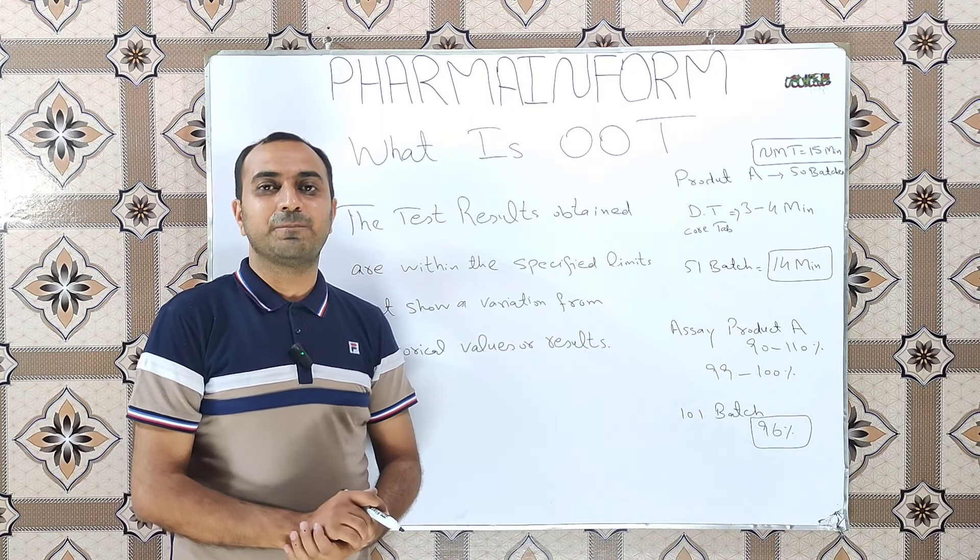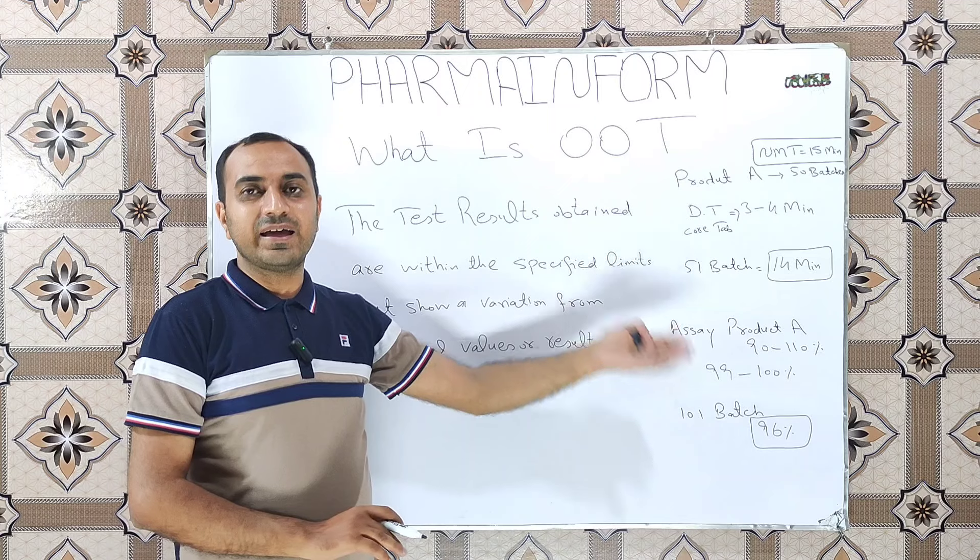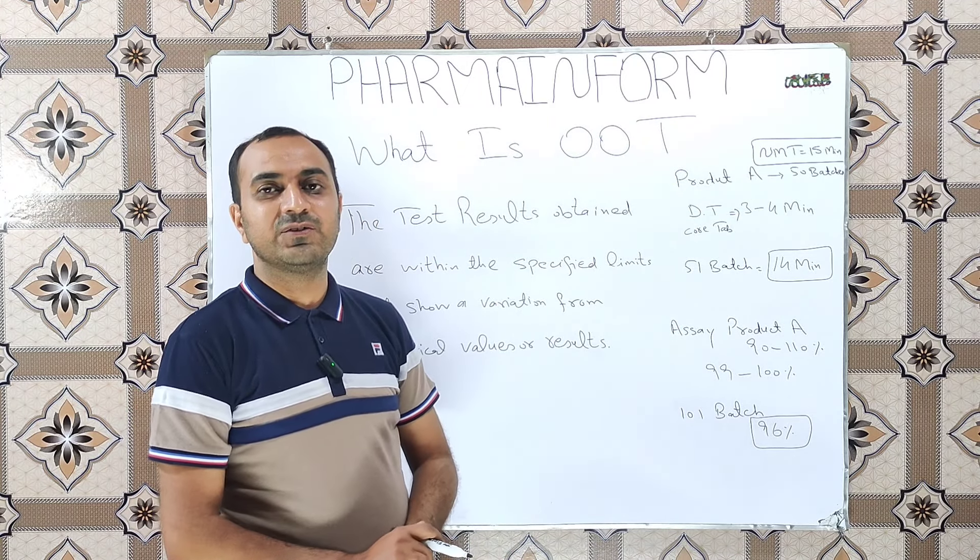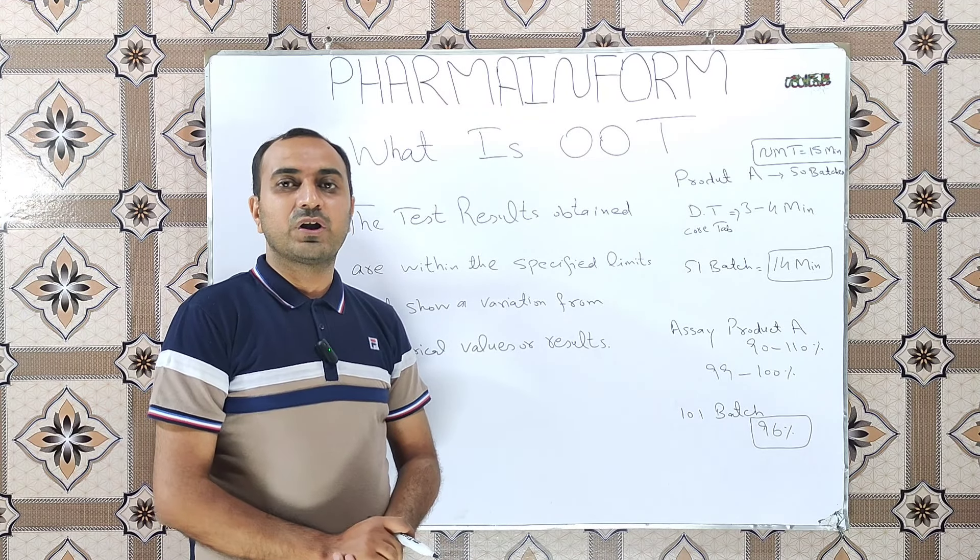In this video, we will discuss the practical example for the disintegration time and the SA value. Suppose we have a product A and we have manufactured its 50 batches and we are talking about the core tablets.